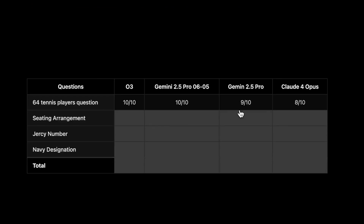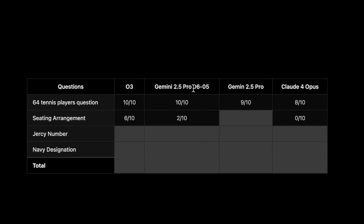The next question is Seating Arrangement — a very hard question. Claude 4 Opus scores 0/10. OpenAI o3 scores the highest to date at 6/10, which confirms o3 is an absolute beast at reasoning. The older Gemini 2.5 Pro scored 2/10, an improvement over previous versions. The latest Gemini 2.5 Pro scores 3/10 — another improvement, which is exactly what we need.